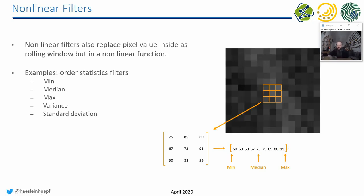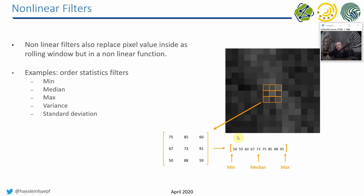There are also different kinds of filters called nonlinear filters. These are operations on pixel neighborhoods that you cannot express as a linear multiplication. For example, you take nine pixel intensities, sort them in a list, and take the smallest value - that's the minimum filter - or the maximum, which is a maximum filter. Or you take the median. The variance and the standard deviation inside the pixel grid can also be seen as nonlinear filters. So we are doing some biostatistics here.